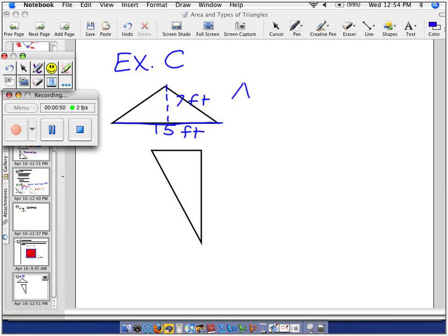I'm going to use my formula. Area of a triangle, this is supposed to be an A, is a formula: one half times base times height.